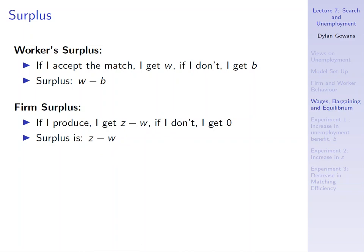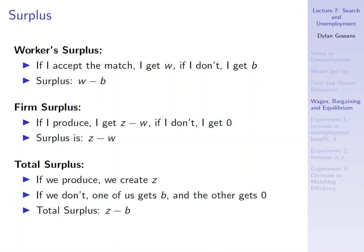A firm and a worker meet and decide whether to produce together. The surplus is the gain from accepting the match and choosing to produce. The total surplus is the sum of worker and firm surplus. Think of it jointly: if we produce we create Z together; if we don't, one of us gets B and the other gets nothing. So total surplus is Z minus B — what we create from matching minus what we would get from not matching.